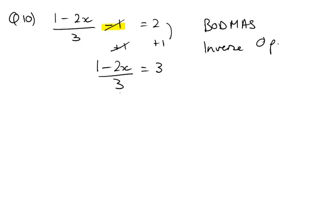Now, inverse operation tells us that we need to get rid of this 3, so we need to multiply both sides by 3. So we're left with just the top of this fraction: 1 minus 2x equals 9.